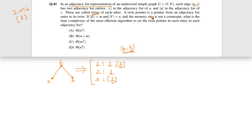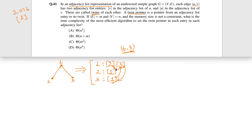Now they define something called a 'twin'. When 1 is in the adjacency list of 3 and 3 is in the adjacency list of 1, these two entries are called twins. A twin pointer is a pointer from an adjacency list entry to its twin. So if there is a pointer from entry 3 (in node 1's list) pointing to entry 1 (in node 3's list), that is a twin pointer, and vice versa.